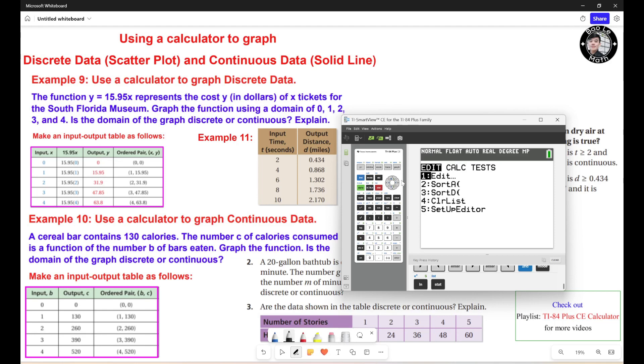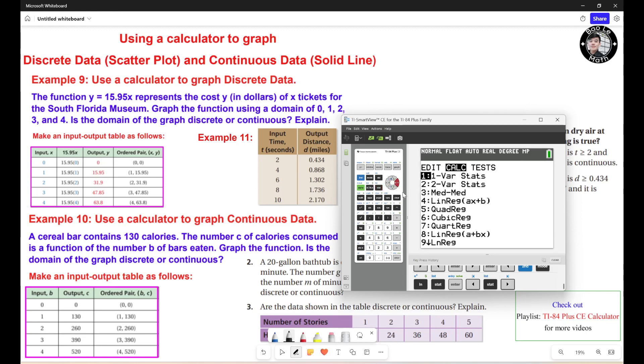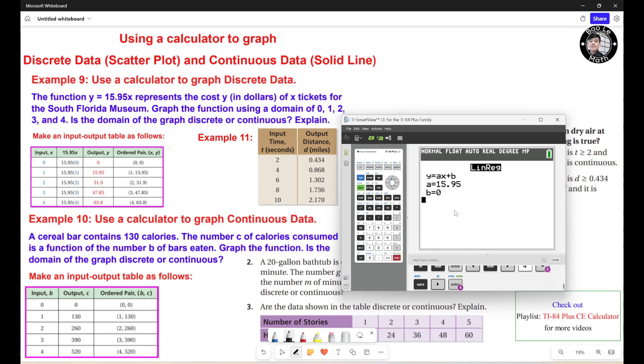So we're gonna hit stat, edit. I read it: L1, which is the input values, L2, which is the output values. I'm gonna hit stat again, go to calc, number 4, linear regression. Make sure this is L1, L2. Go to store right here, hit vars, y-vars, function Y1, and then go to calculate, hit enter. Yes, the equation is exactly Y equals 15.95X, X B equals 0.